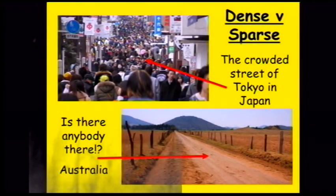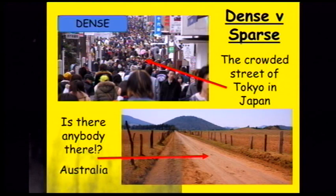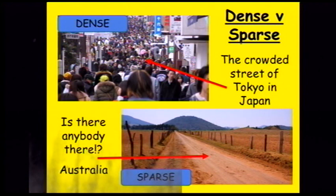Dense versus sparse: dense means there are lots and lots of people crowded together. The example in this photograph is Tokyo in Japan. Sparse means the area does not have very many people — people are very spread out. The example in this photograph is the outback in Australia.